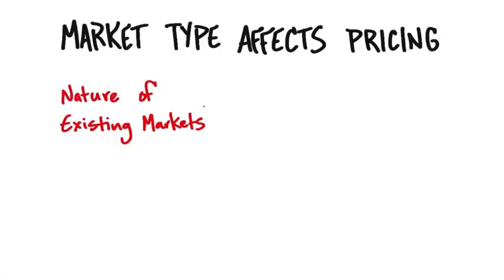Now, one other thing affects pricing, and we should think about it. In an existing market, if you remember our discussion about market type, we have existing markets, we resegment markets, we might be in a new market, or if we're in a country outside the United States, we might be cloning an existing business model.